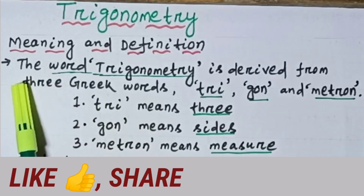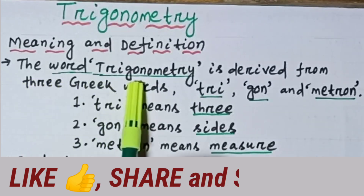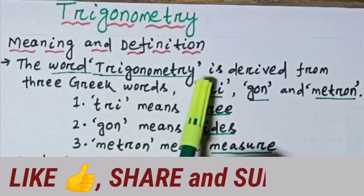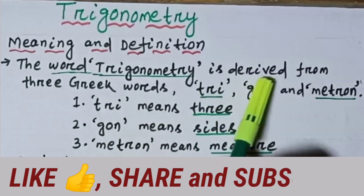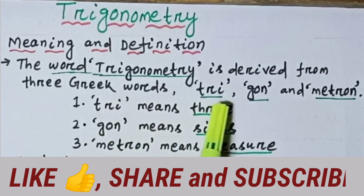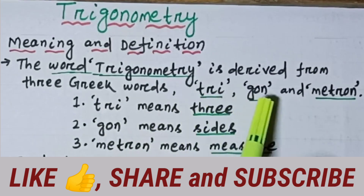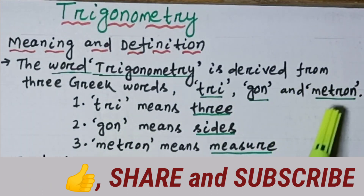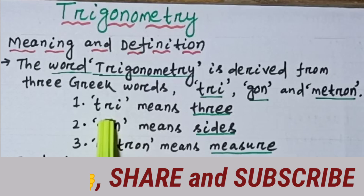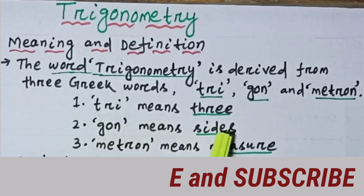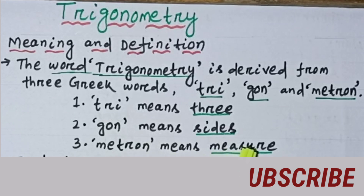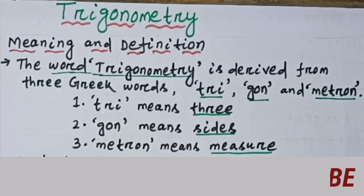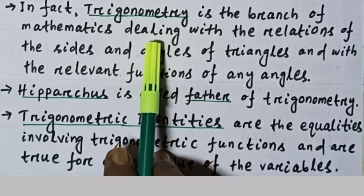The word trigonometry is derived from three Greek words: tri, gon, and metron. Tri means three, gon means sides, and metron means measure. This is the meaning of trigonometry.